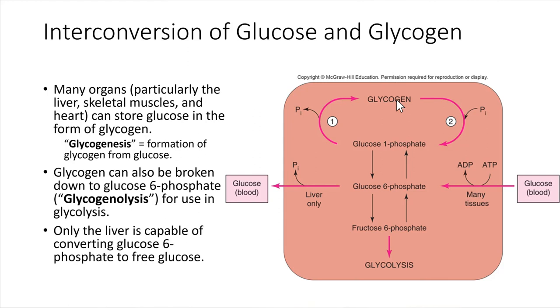If the cell finds that it needs some energy, it can break down that glycogen and reform glucose 6-phosphate molecules, which can enter into the glycolysis pathway, just like we learned about.